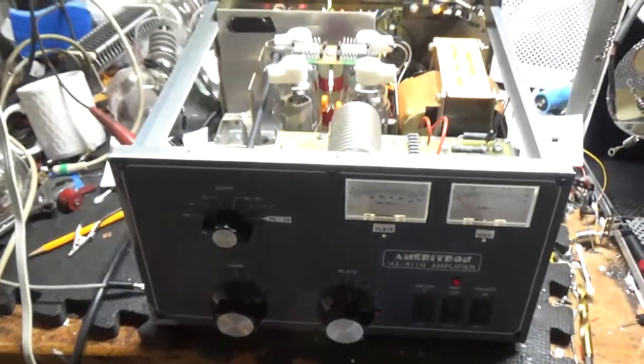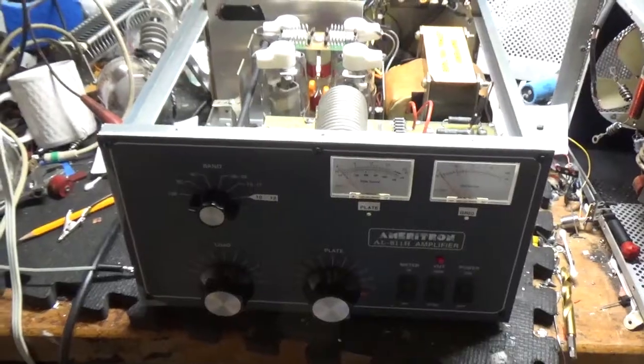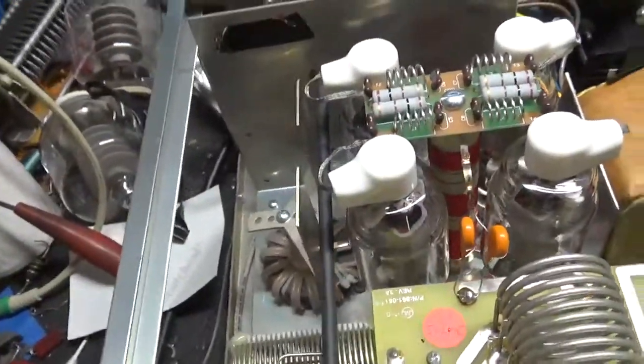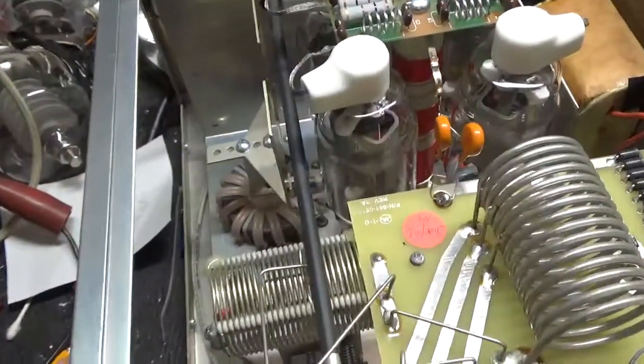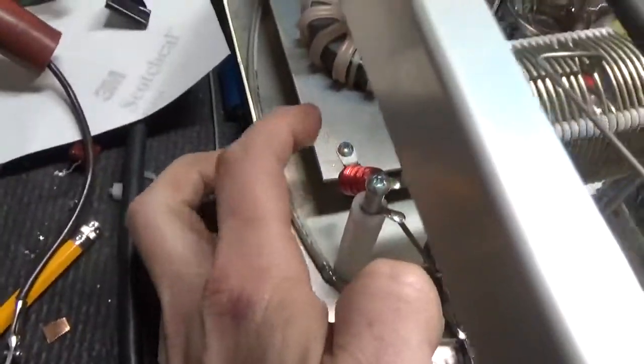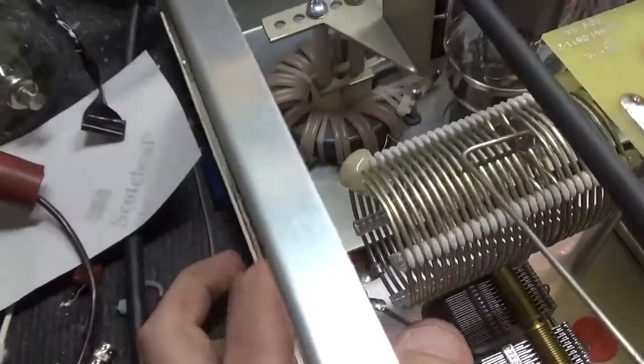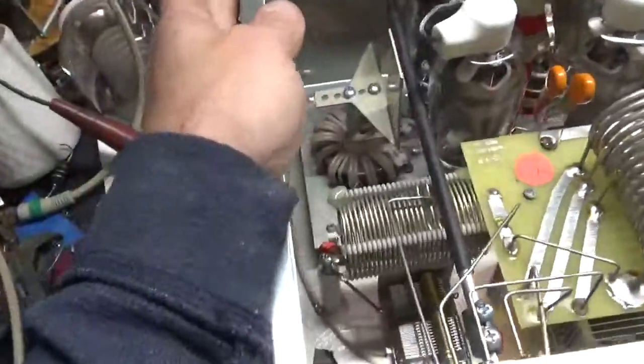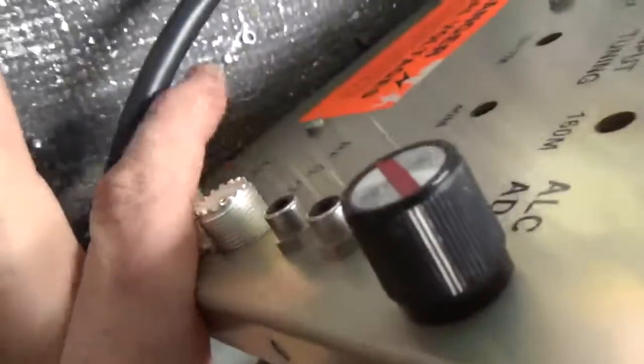Hey everybody, I'm back with the completed amplifier, the Ameritron AL-811H. I took the assembly out, grounded the grids the proper way, re-secured the output safety choke to a new connection strip, did the bias modification.